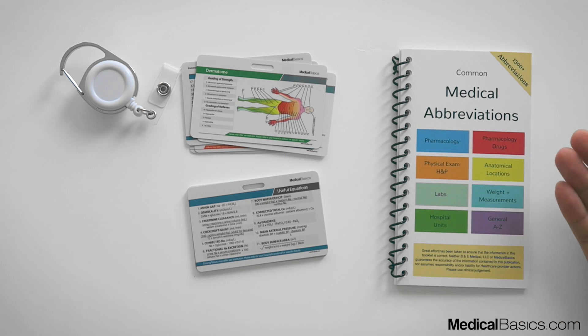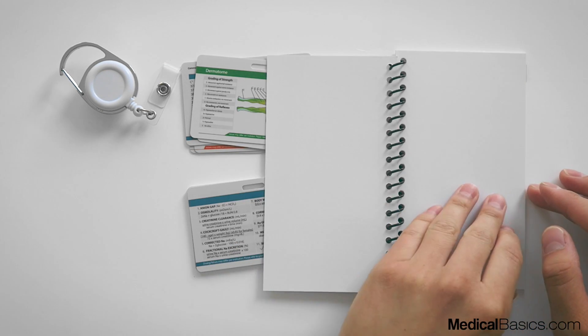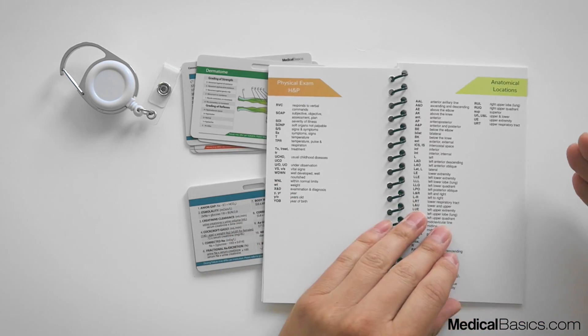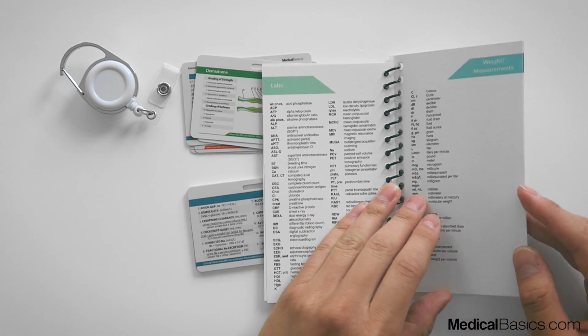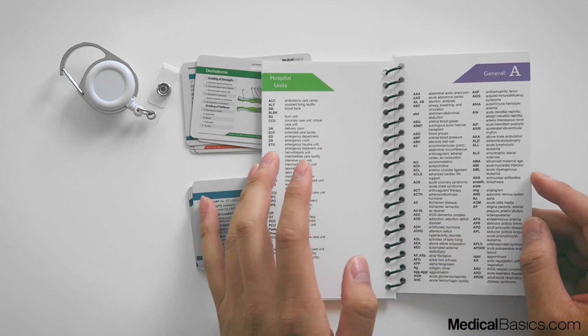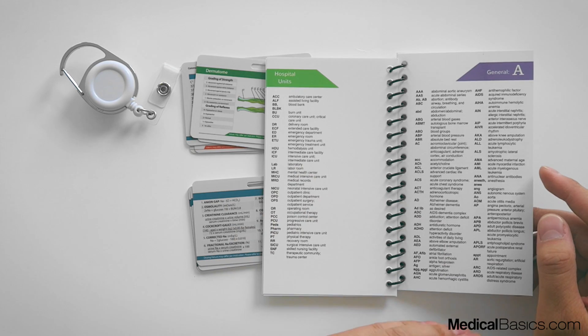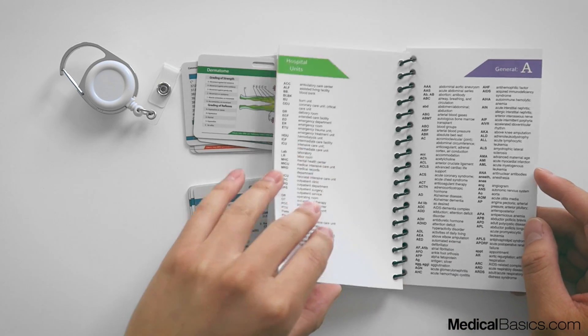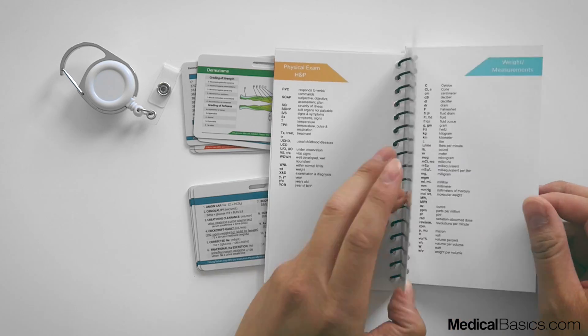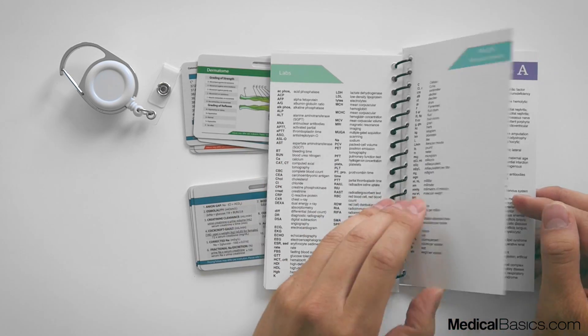And then what we kind of paired it along with, because it was very similar, was the different types of abbreviations. The one rotation that I found was the most difficult for all the different types of abbreviations was in OB. And so we kind of divided up just by general things, going by alphabetical, as well as things that you would use maybe in surgery or maybe different types of weights or different types of labs.